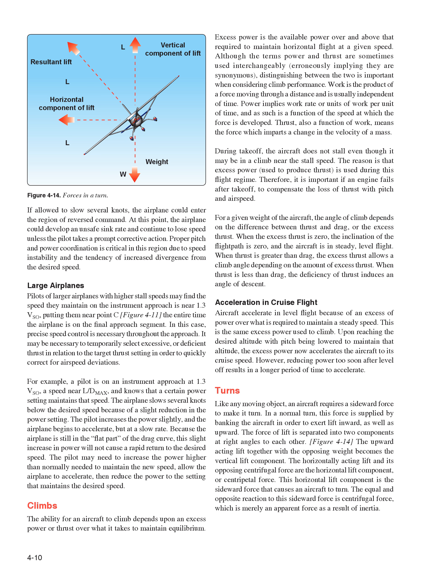Large Airplanes. Pilots of larger airplanes with higher stall speeds may find the speed they maintain on instrument approaches near 1.3 VSO puts them near the neutral stability point for the entire final approach segment. Precise speed control is necessary throughout the approach. It may be necessary to temporarily select excessive or deficient thrust in relation to the target thrust setting in order to quickly correct for airspeed deviations. For example, a pilot on an instrument approach at 1.3 VSO who experiences a slight reduction in power setting may need to increase the power higher than normally needed to maintain the desired speed, allow the airplane to accelerate, then reduce the power to the setting that maintains the desired speed.